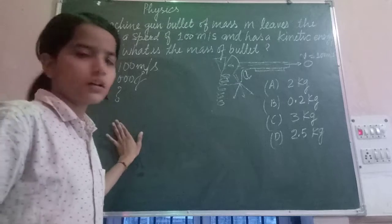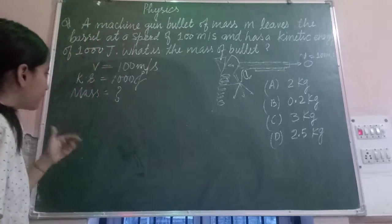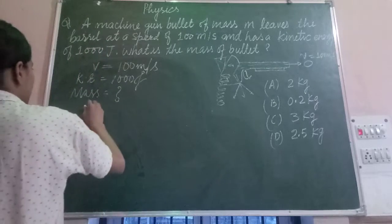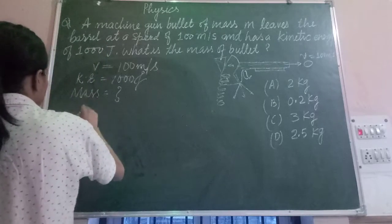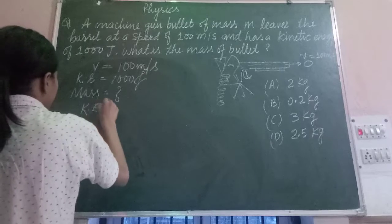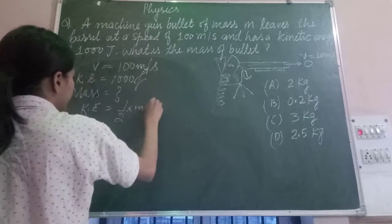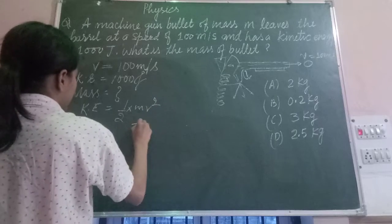We will put this formula. After putting the formula, we will put all these numbers that are given to us. KE is equal to half mv squared.